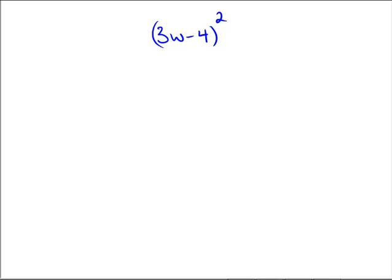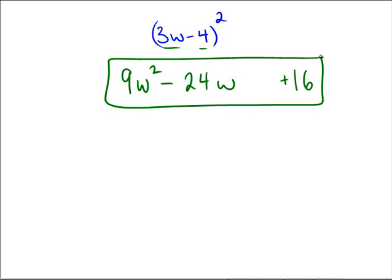Assuming you paused the video and gave it a shot here, 3w squared would be 9w squared. 4 squared would be 16, so I'm going to put that one on the back. The sign is a minus sign, so I'm going to leave the minus sign right there. And as far as the product of the two go, 3 times 4 is 12, doubled is 24, and it's a 24w. So the final answer is 9w squared minus 24w plus 16.